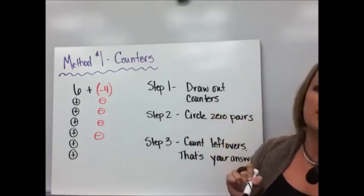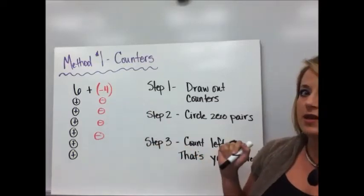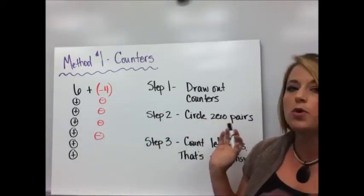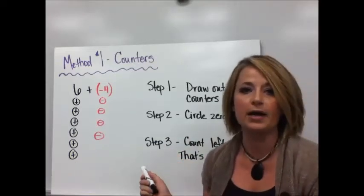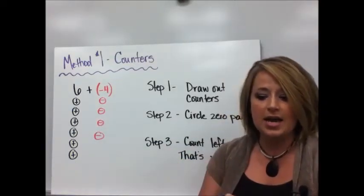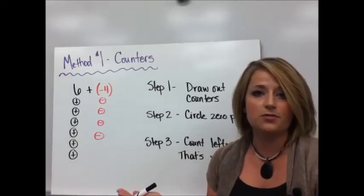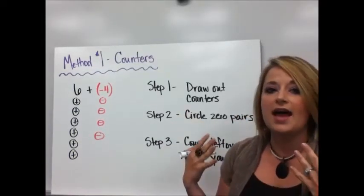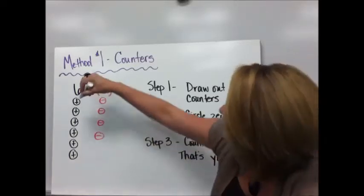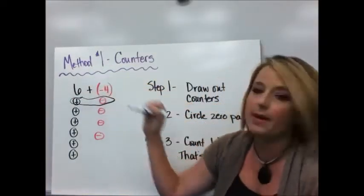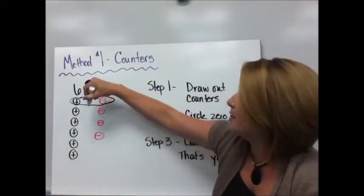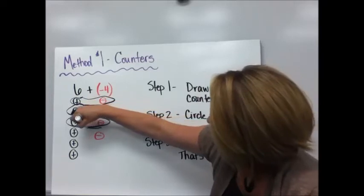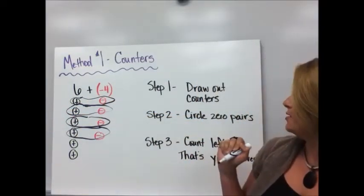So step one is to draw out your counters. I already have that done for you there. Step two is to circle any zero pairs. Well let's think about what's meant by zero pair. Last lesson we looked at opposites. A number and its opposite are the same distance from zero on a number line. And when you put them together they have a sum of zero. So I'm pairing them up and they have a value of zero.